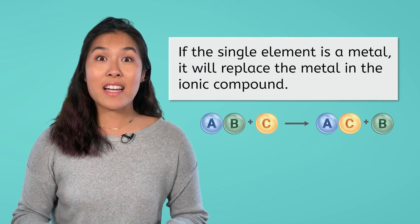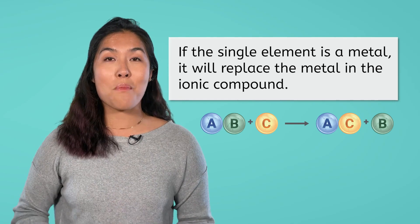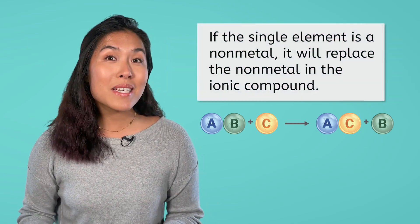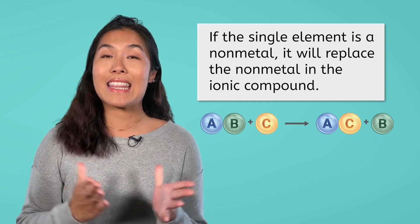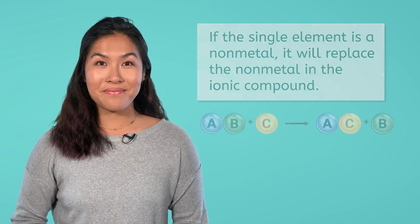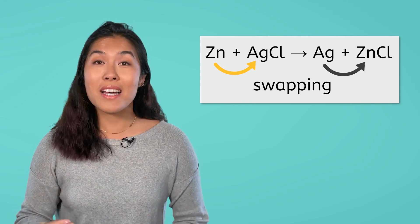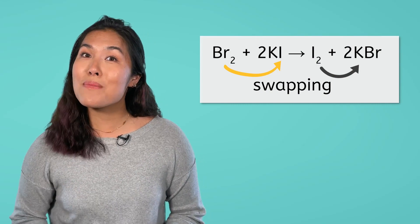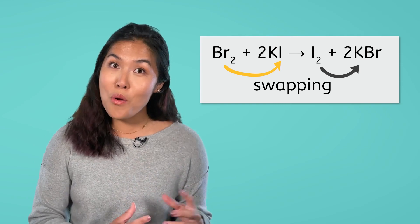If the single element in the reactants is a metal, then it replaces the metal in the ionic compound. If the single element in the reactants is a nonmetal, then it replaces the nonmetal in the ionic compound. Two examples of single displacement reactions are zinc plus silver chloride react to form silver plus zinc chloride, and bromine plus potassium iodide react to form iodide plus potassium bromide.